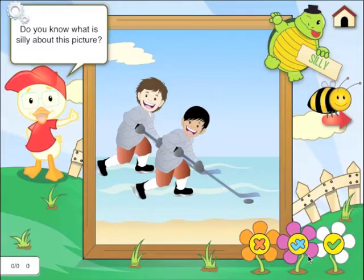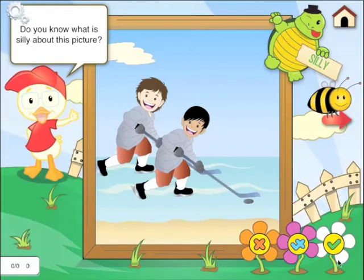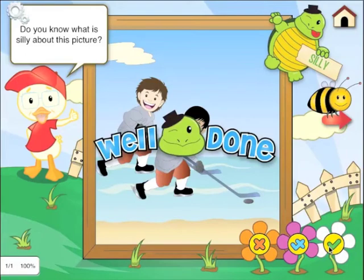Now we have here buttons for correct, incorrect, and correct with help — it would be the button in the middle. You as the therapist or the parent, if you are working with the child as you are playing this image, then you can mark one of these buttons. Well done, that's silly.